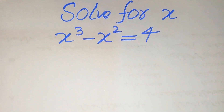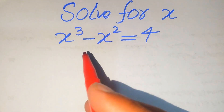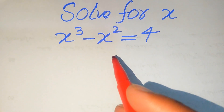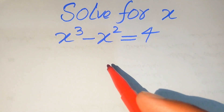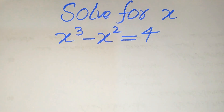Hello everyone. How to solve this problem for the values of x if we have x cubed minus x squared equals 4, and we solve this problem for all the values of x.